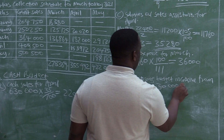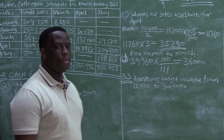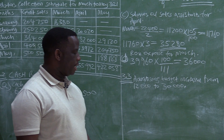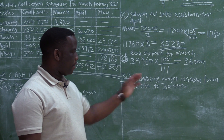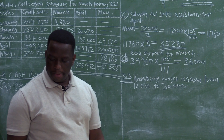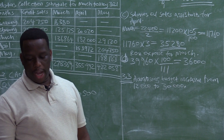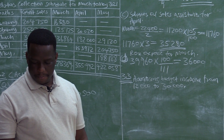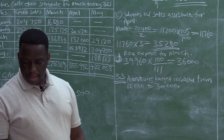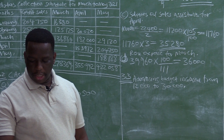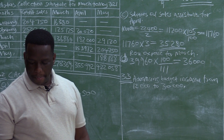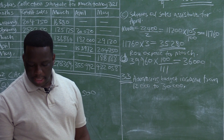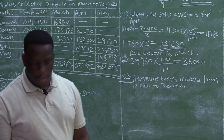It means the directors noticed that they need to advertise more. So they decided to increase the advertising budget from $12,000 to $30,000. And what we are noting in information H is that even though it was increased from $12,000 to $30,000, the actual amount that was spent on advertising was $42,000.